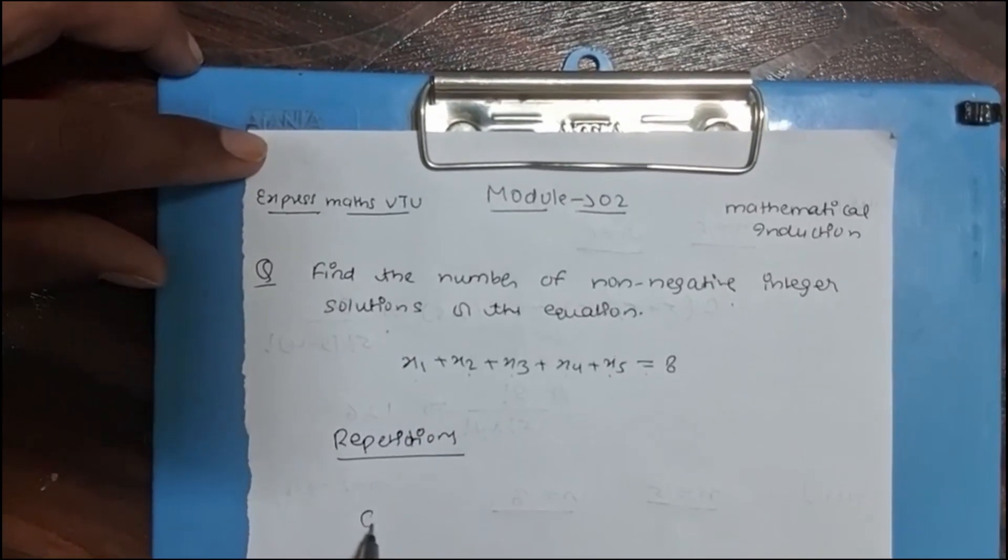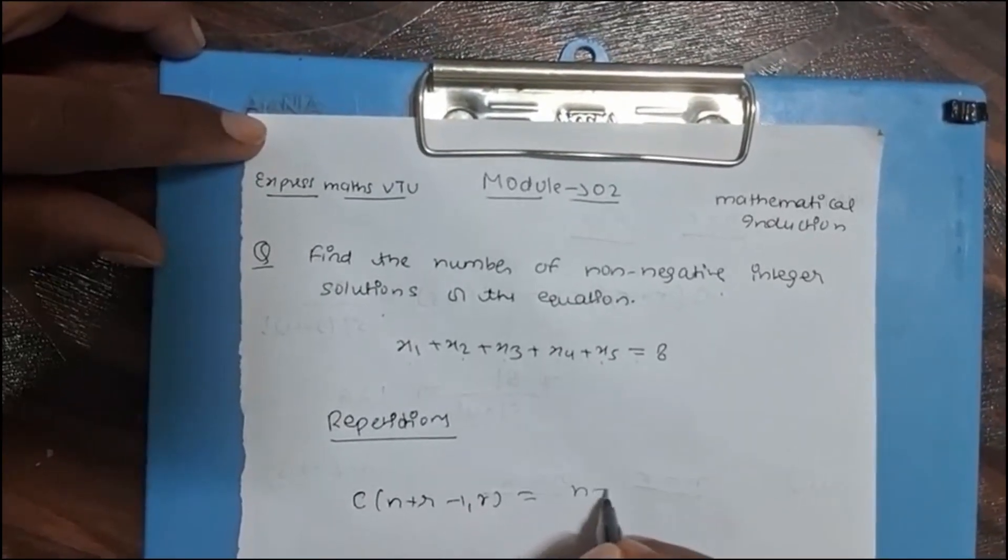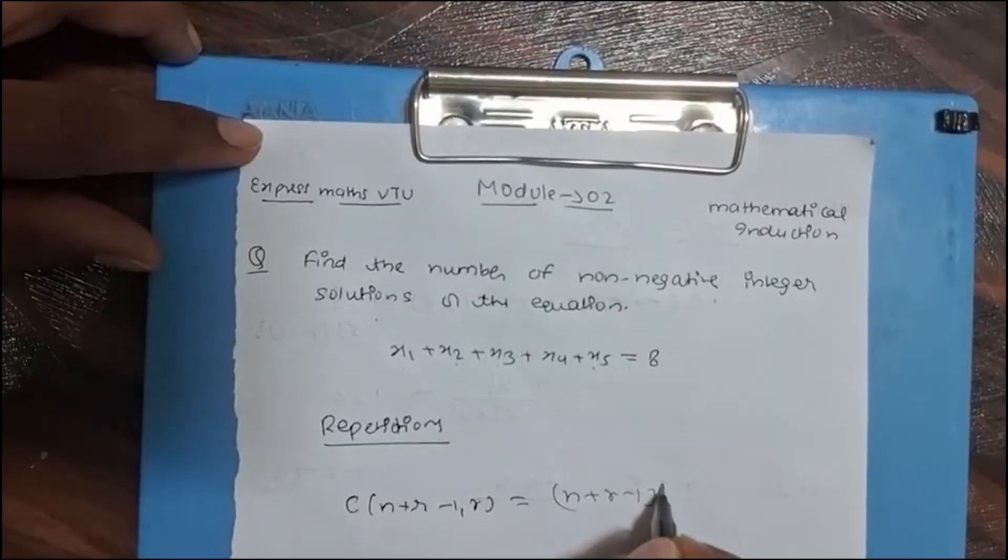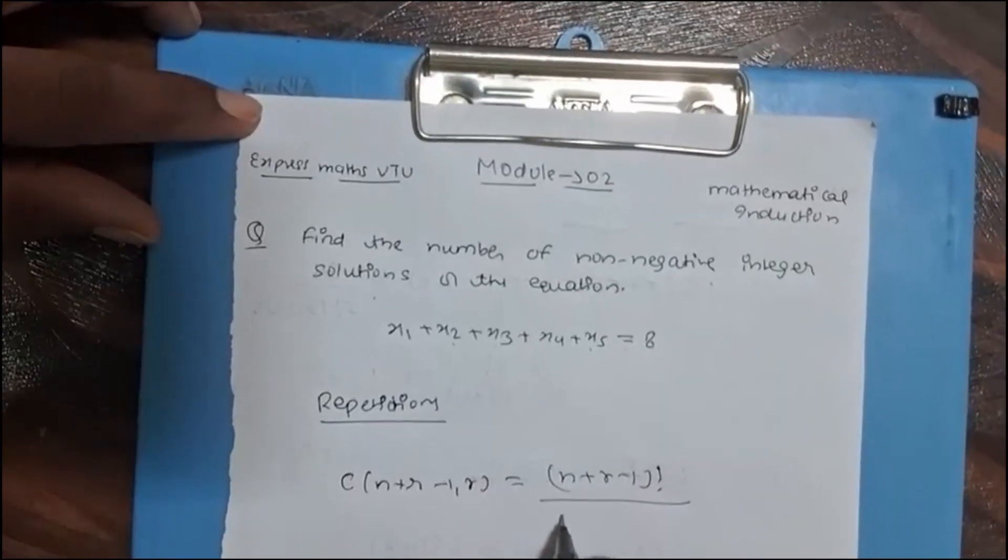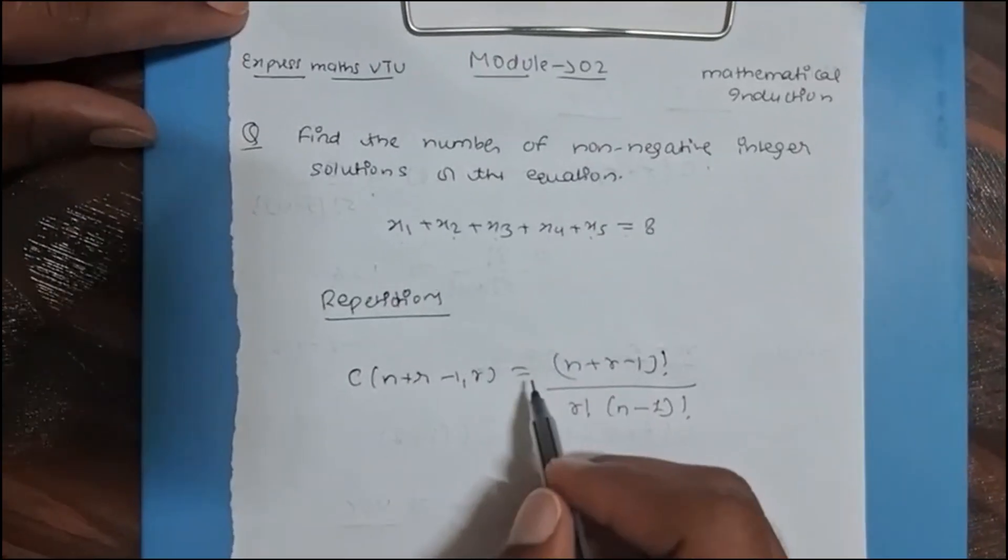The formula is C(n+r-1, r) = (n+r-1)! divided by r! divided by (n-1)!. So this is the formula of repetition with combination.